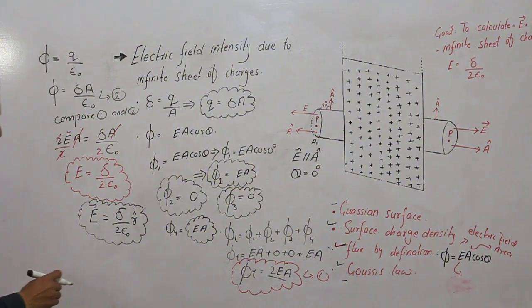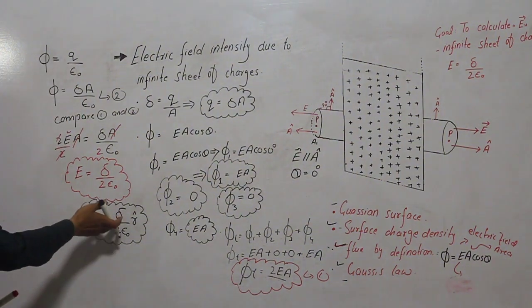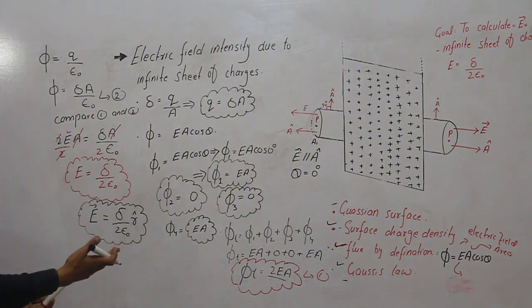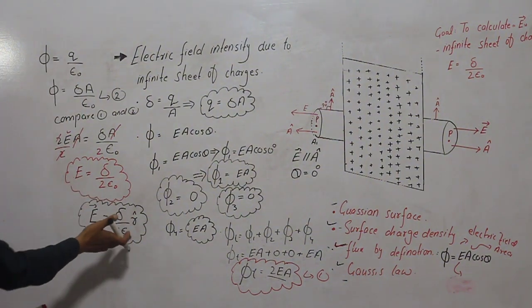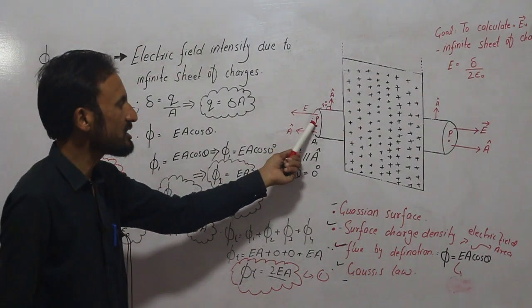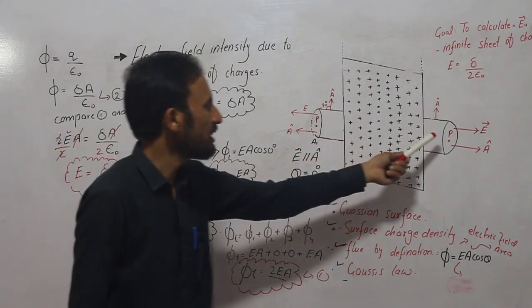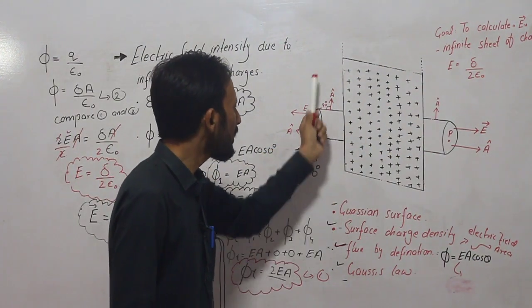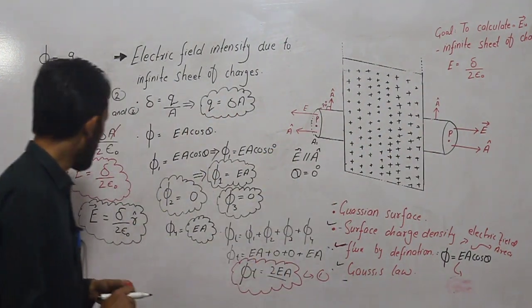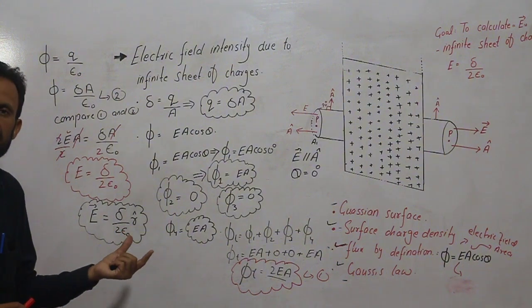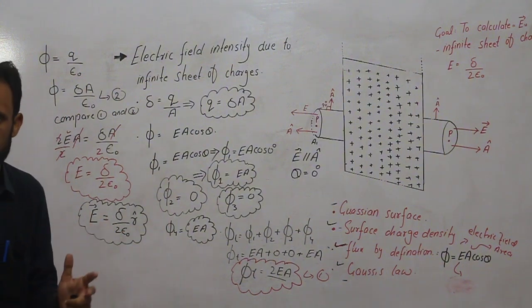When the sigma value is given and epsilon naught is known, you can use this equation to calculate the electric field intensity due to the infinite sheet of charge directly.